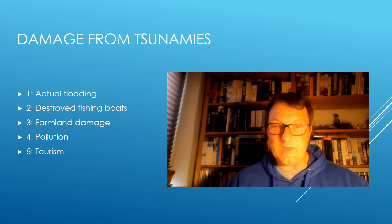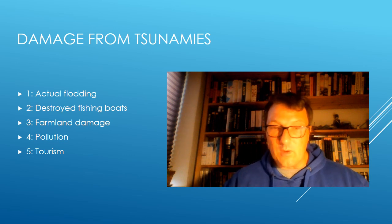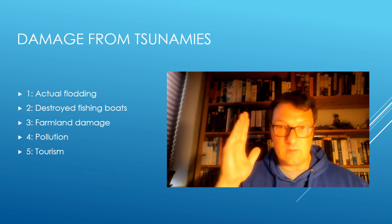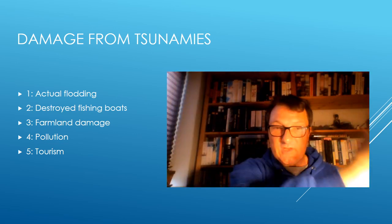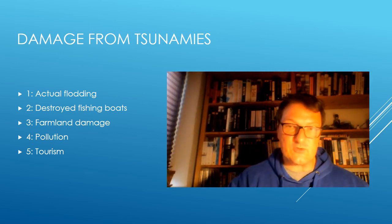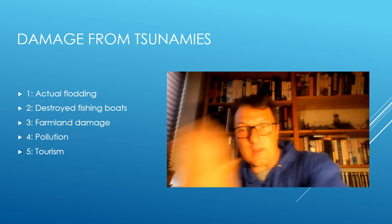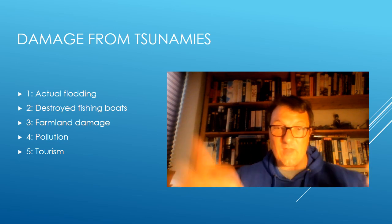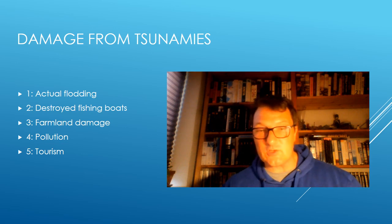Tsunamis can be incredibly damaging to human populations living near the coast. The immediate destruction actually happens in two phases, not just one. First, when the water rushes inland it can destroy houses, cut down trees, sweep away cars, and destroy infrastructure. Then when the water goes back out again, it drags cars and debris with it — parts of houses, trees — all floating back, adding even more destruction to the buildings and structures around it.